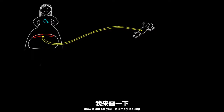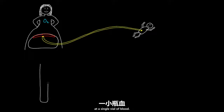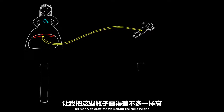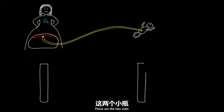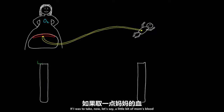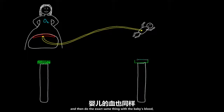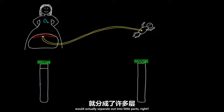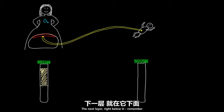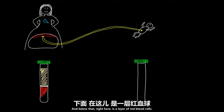The first trick — let me draw it out — is looking at a single vial of blood. If we look at a vial from mom and compare it to a vial from the baby, and take some of each blood sample and spin it down, that spun blood would separate out into three different layers. The first layer is the plasma. Right below it is a small layer of white blood cells and platelets. And below that is a layer of red blood cells.